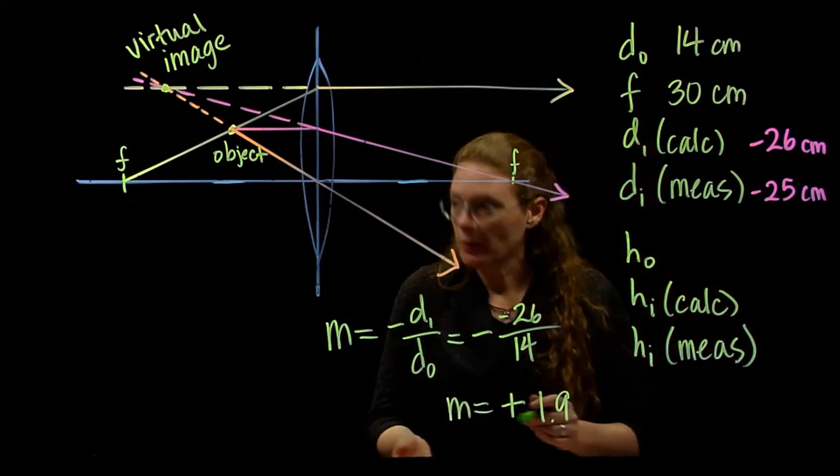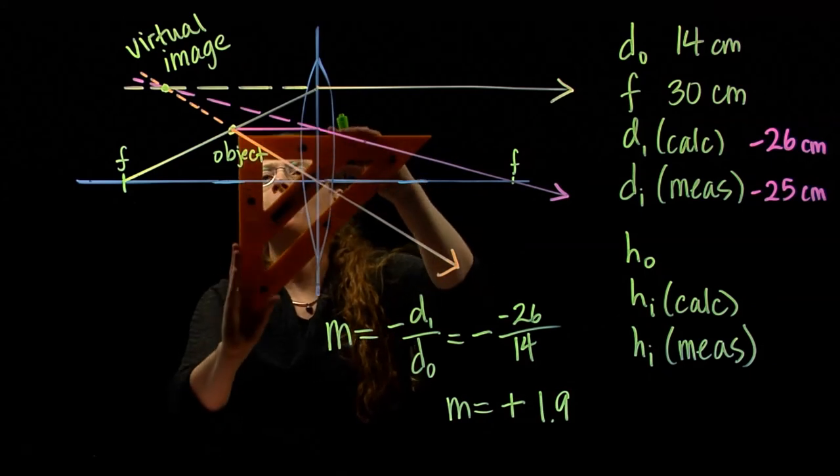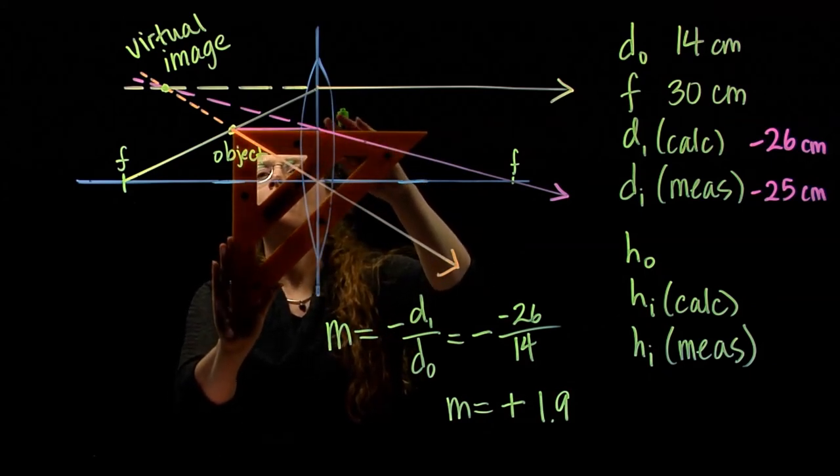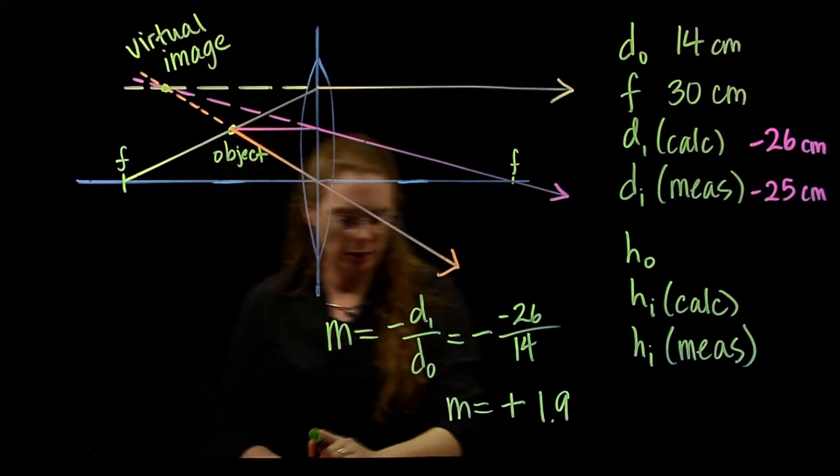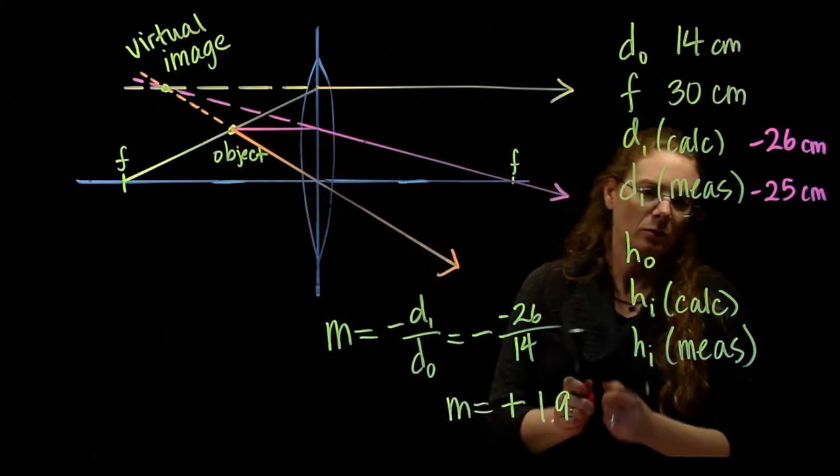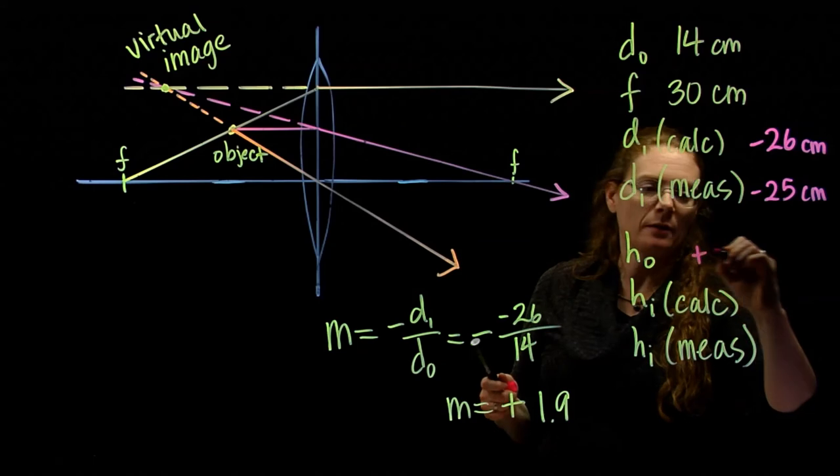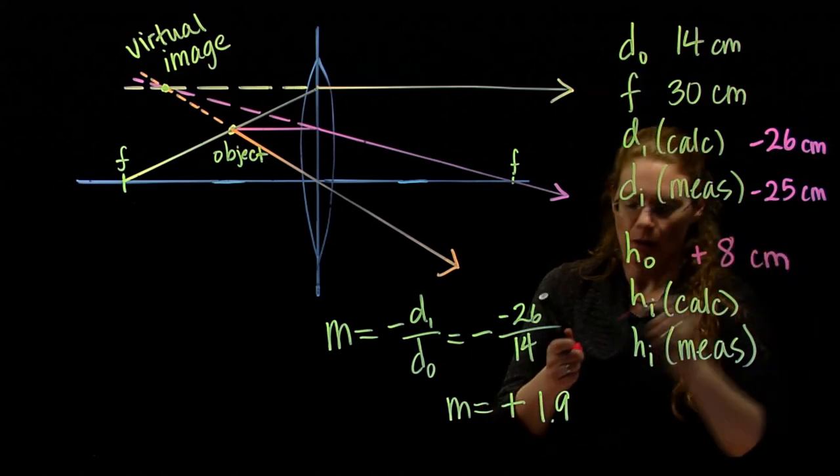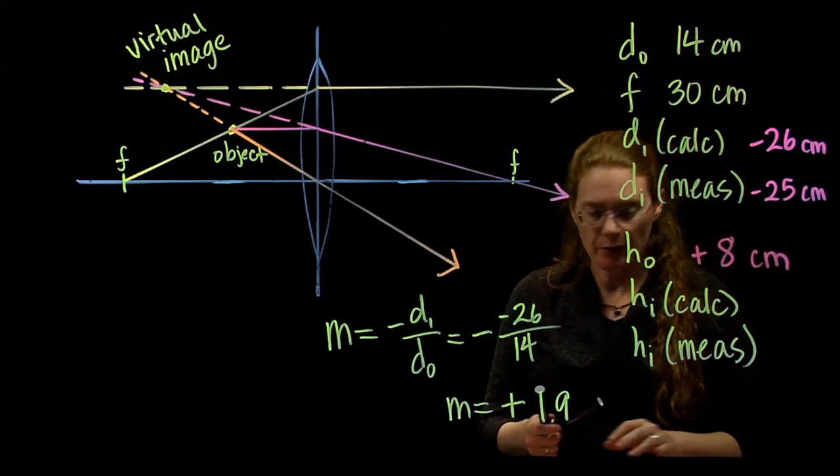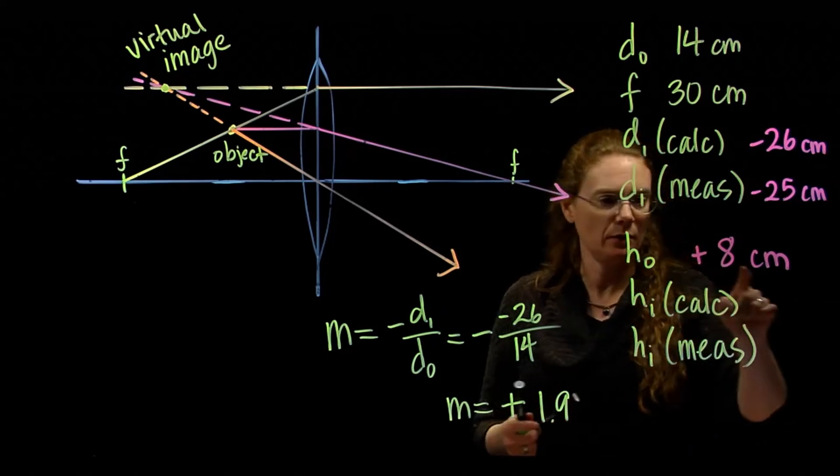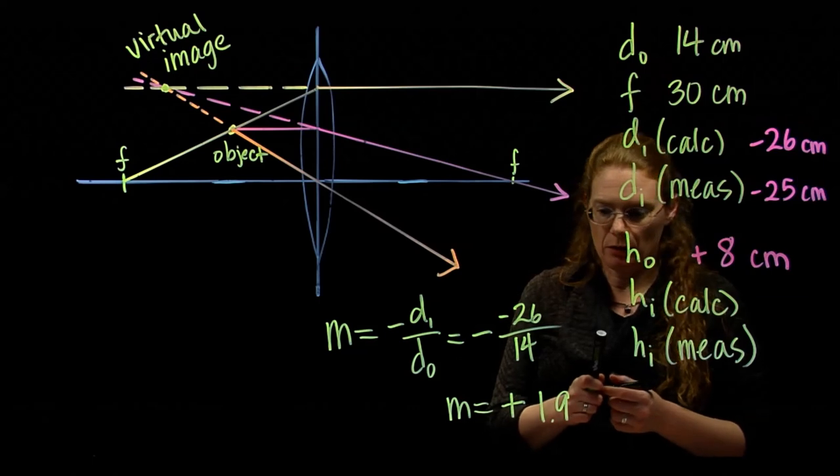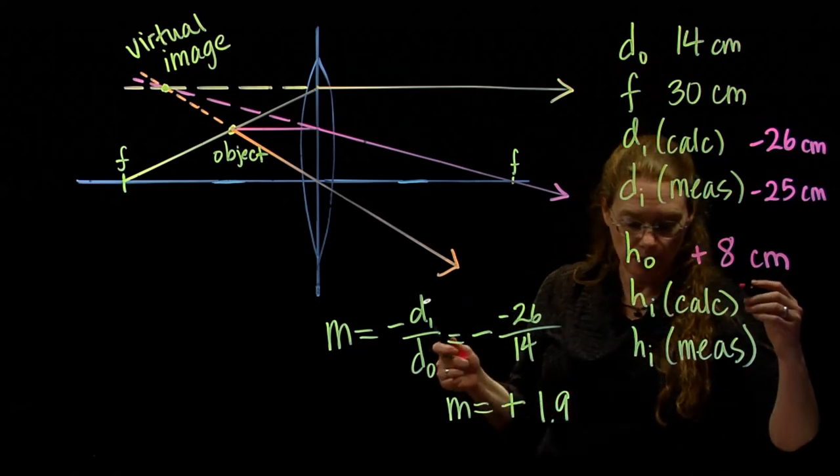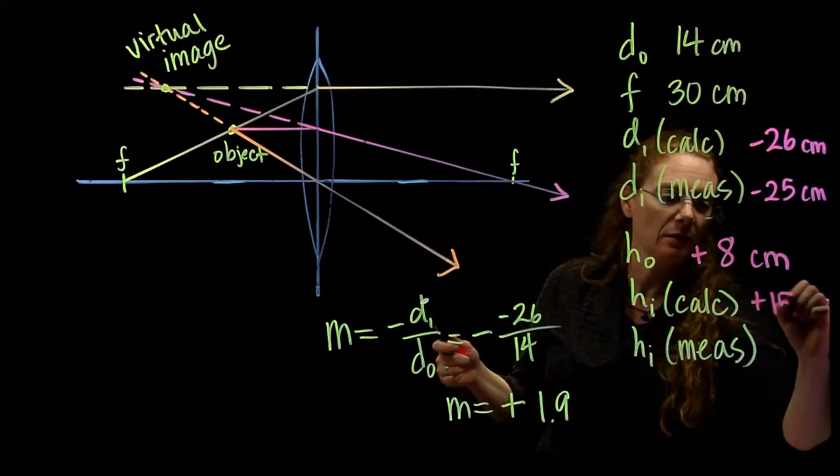HO, oh, I've got to measure that. HO, how tall is my object? From here to here is 6, 7, 8 centimeters. So HO, that's a positive 8, it's above. HI calculated is magnification times HO. Times 8, and we get a positive, for calculated, we get a positive 15 centimeters. Just about twice my original height, yeah.